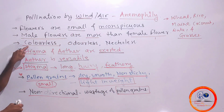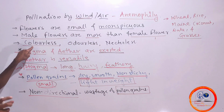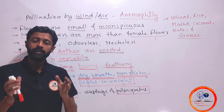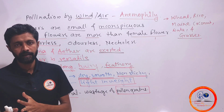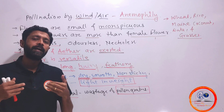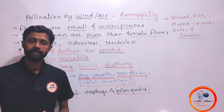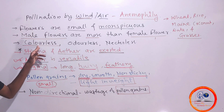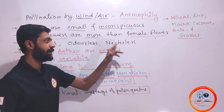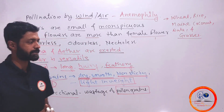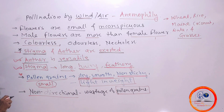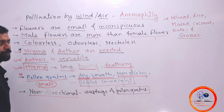Next, anemophilous flowers are colorless, odorless, and nectarless, because the pollinating agency is abiotic — there is no need to attract any biotic pollinator.